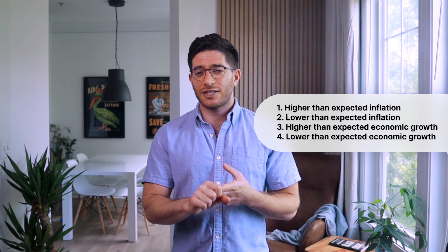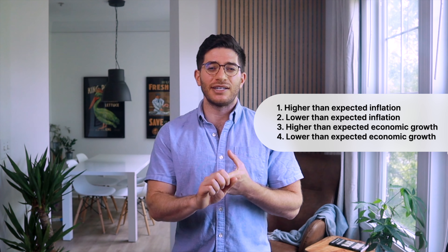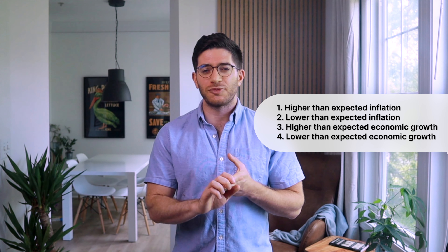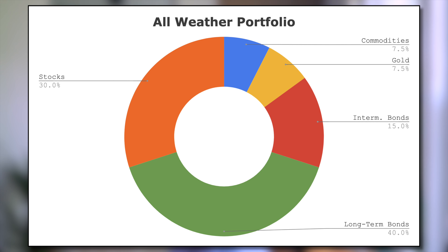The four seasons are: higher than expected inflation, lower than expected inflation, higher than expected economic growth, and lower than expected economic growth. Dalio chose asset classes that performed well in each of these different seasons, with the goal being diversification that allows for consistent growth and small drawdowns. To minimize volatility, the portfolio is mostly bonds and only allocates 30% to stocks. The All-Weather Portfolio asset allocation looks like this: 30% US stocks, 40% long-term treasury bonds, 15% intermediate-term treasury bonds, 7.5% commodities, and 7.5% gold.